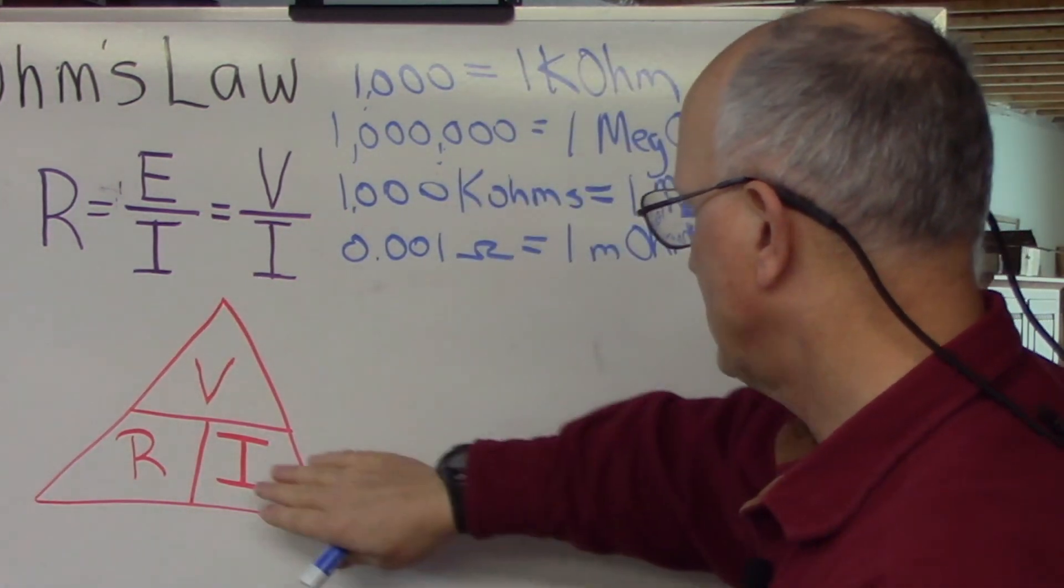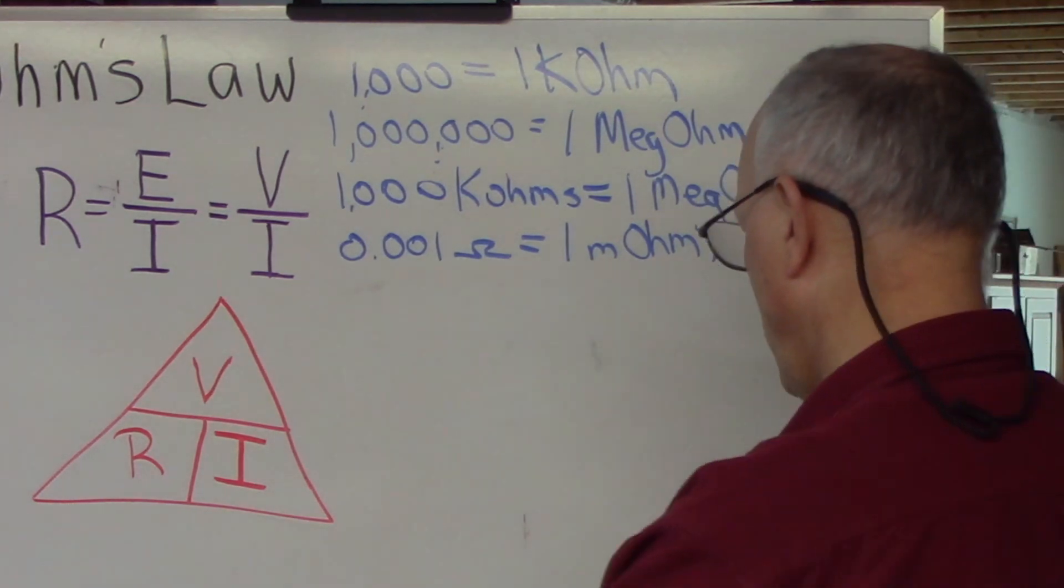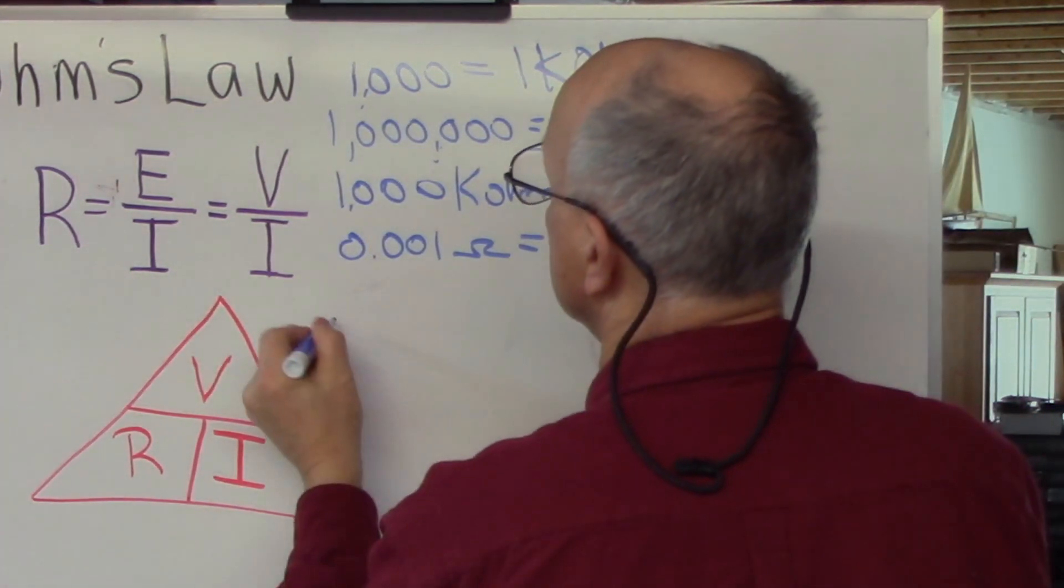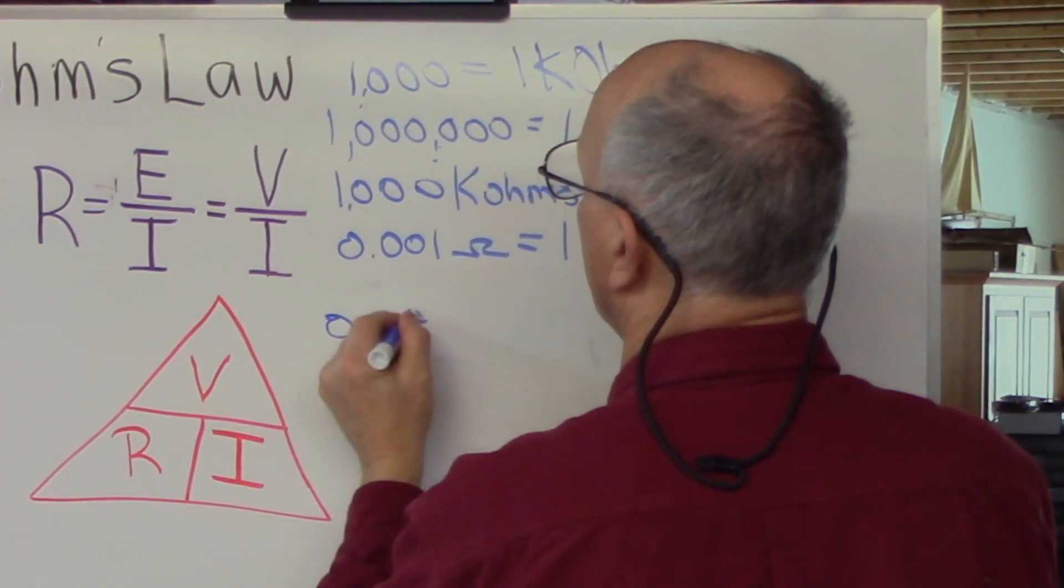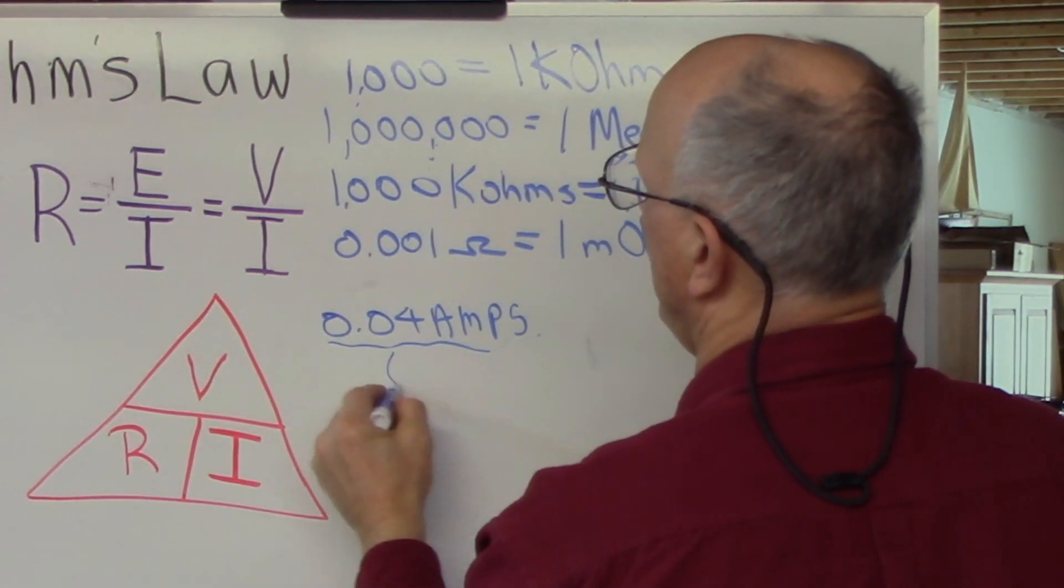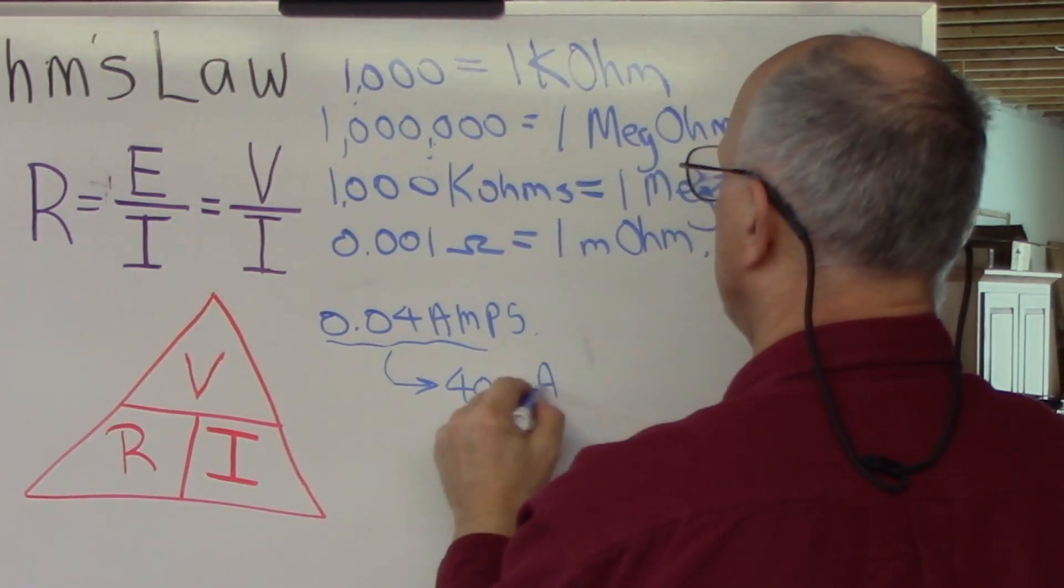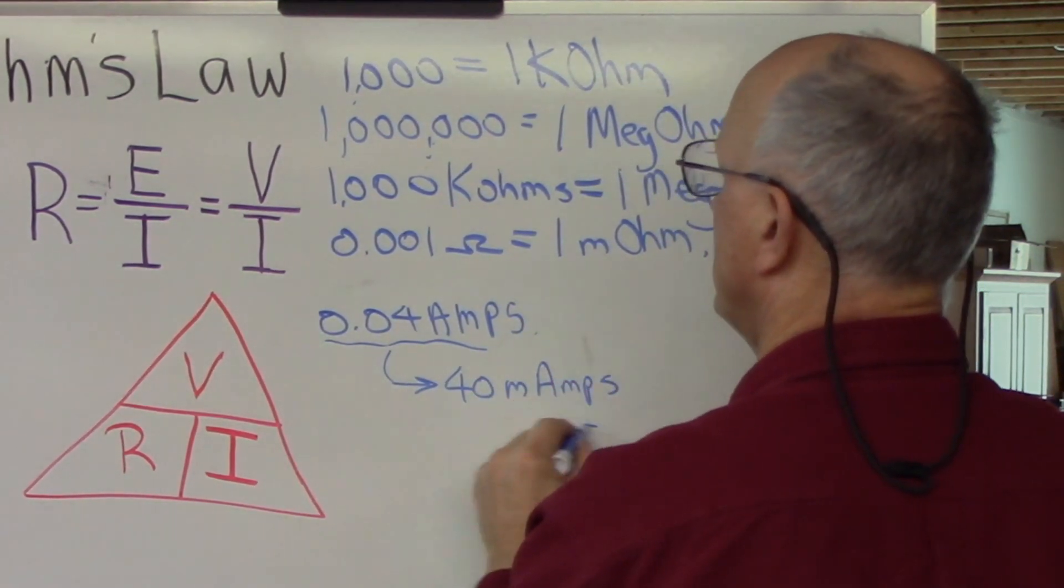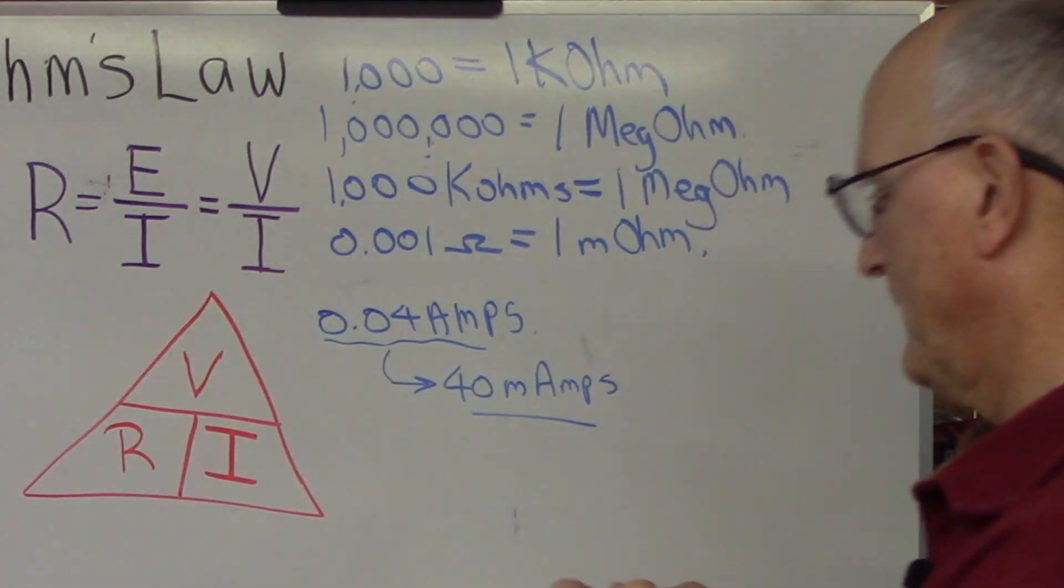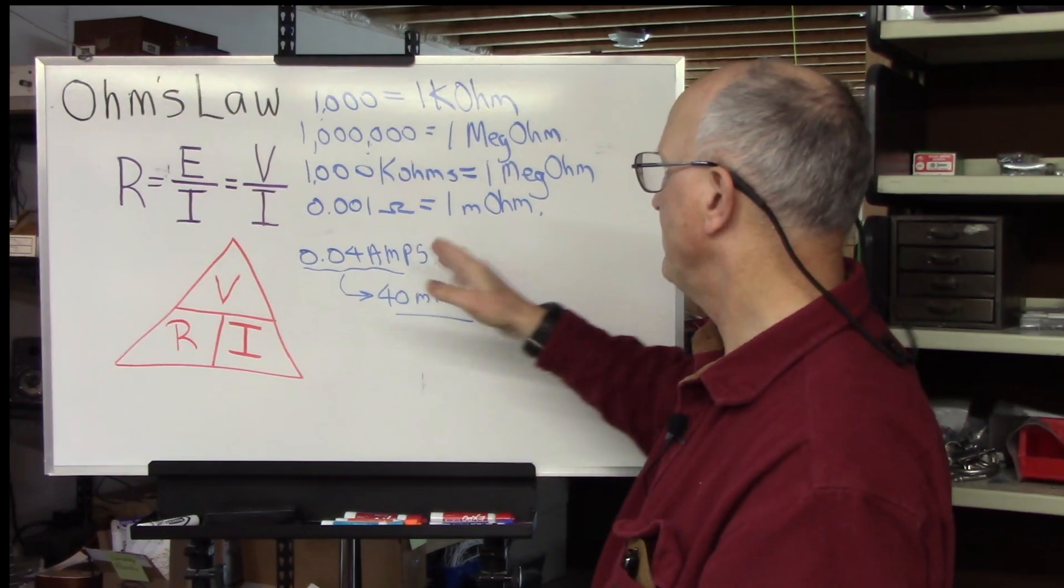If we go 0.001 ohms is equal to 1 milli-ohm or 1,000th of an ohm. The same kind of things apply to current. We have 1 milli-ampere. Remember, we had that current that was 0.04 amps. This is the same as 40 milli-amps. So we don't want you to be confused at that.